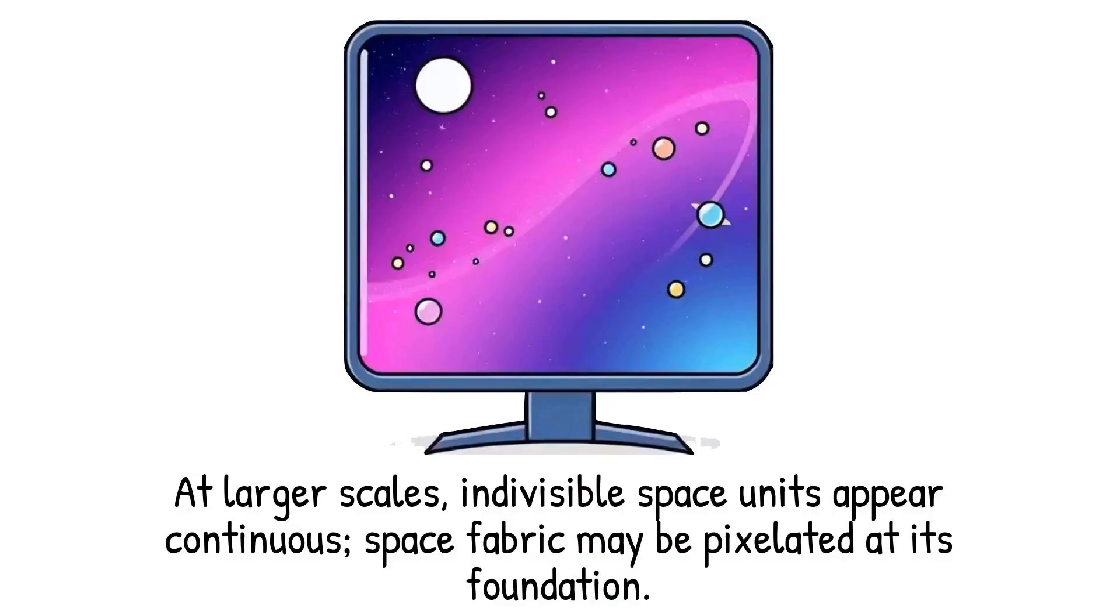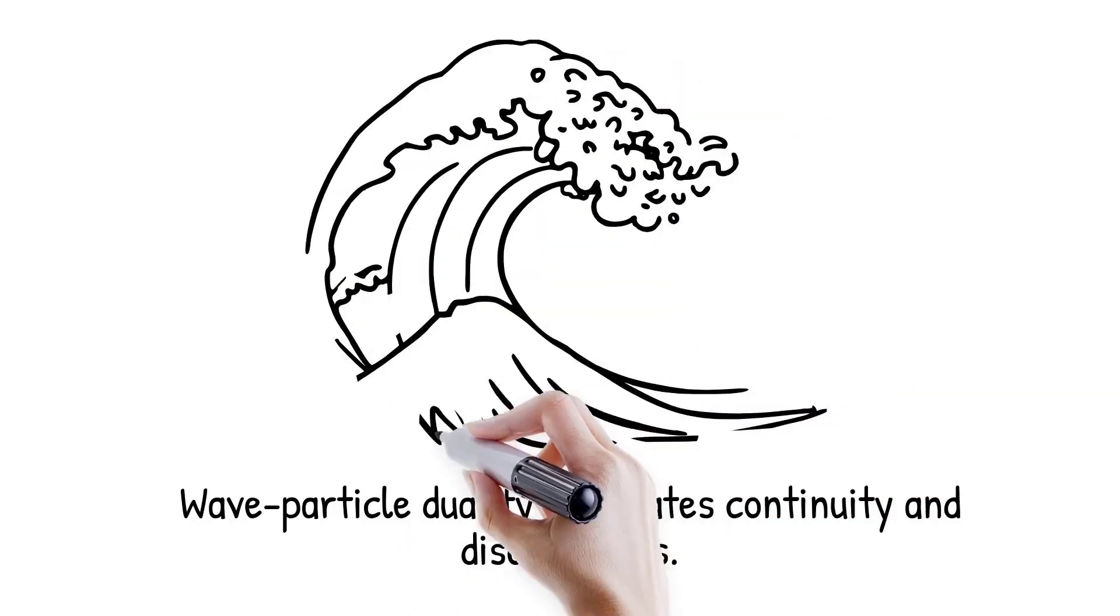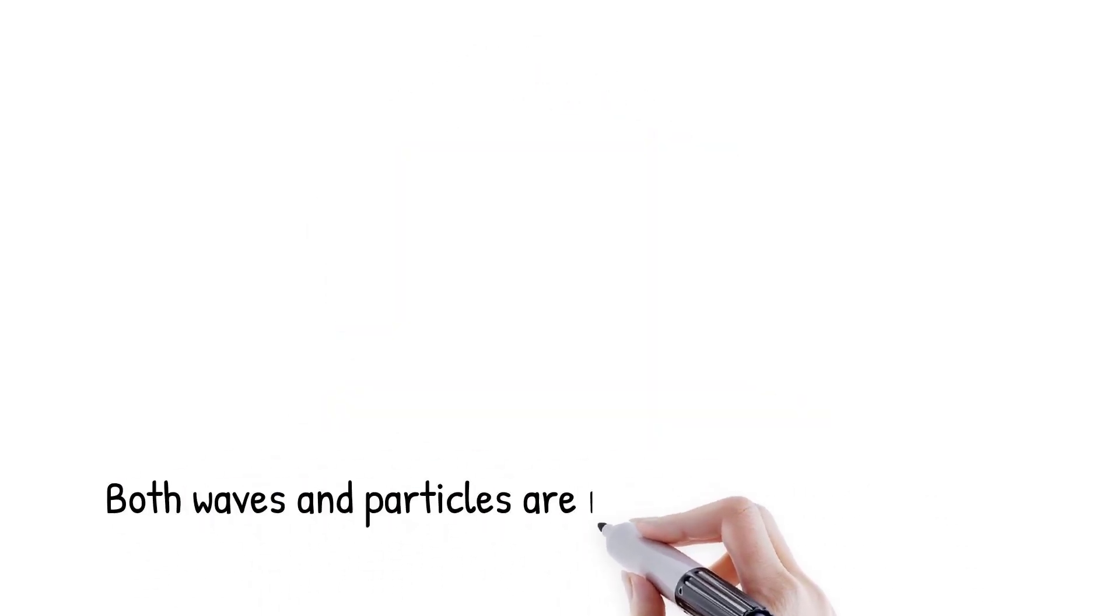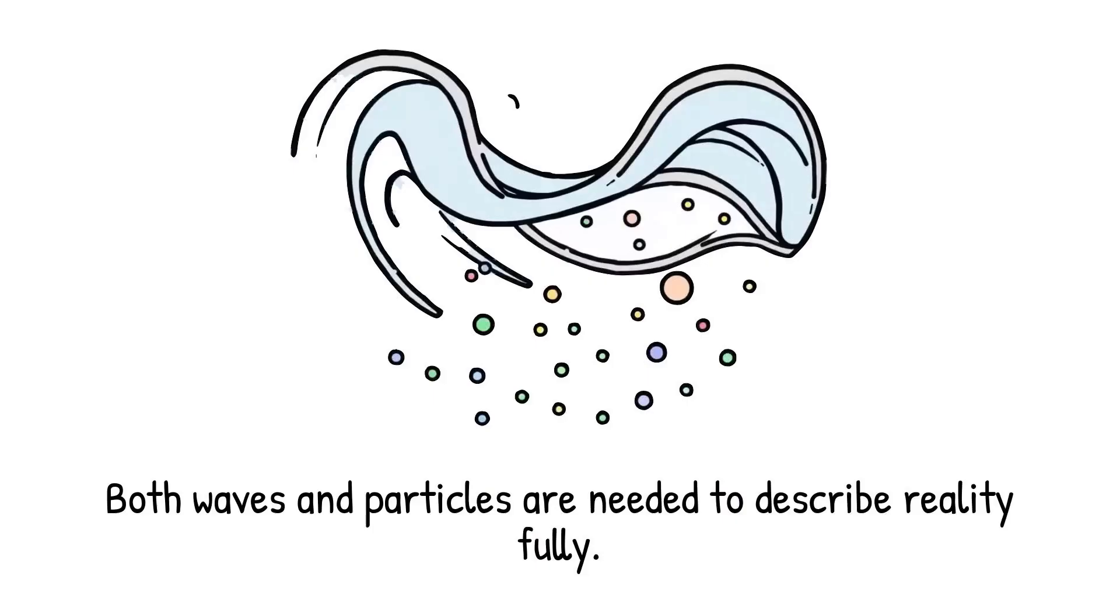The wave-particle duality illustrates how continuity and discreteness coexist. Light and matter exhibit both wave-like spread and particle-like quantization. Waves suggest smooth continuity while particles reveal discreteness. Experiments such as the double slit show both aspects simultaneously. Neither description alone captures the full reality. Both are needed. Nature seems to weave continuity and discreteness into one fabric. Electrons interfere like waves but strike detectors as discrete impacts. It is like a rope that is both continuous along its length and made of discrete strands.